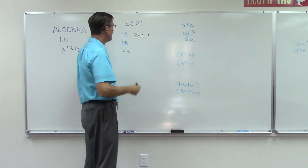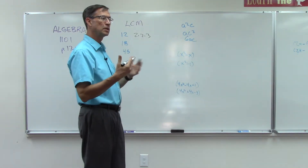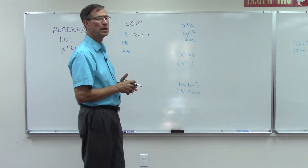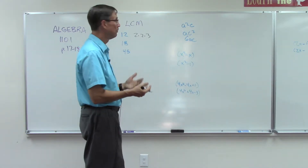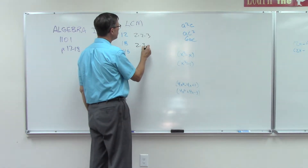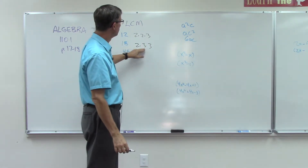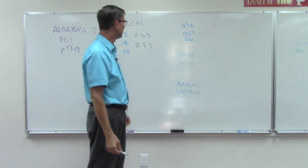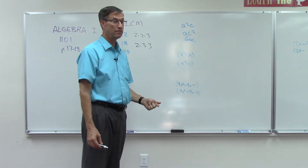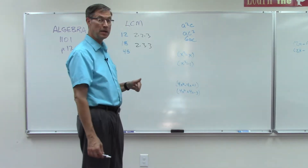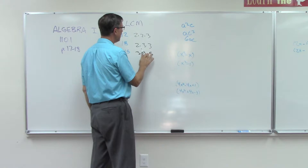For 18, whether you start with 2 times 9 or 3 times 6, I'm going to take 2 times 9, and 9 is 3 times 3, so 18 = 2 times 3 times 3. You can check it: 2 times 3 is 6, and 6 times 3 is 18. For 45, it's 9 times 5, and 9 is 3 times 3, so 45 = 3 times 3 times 5.